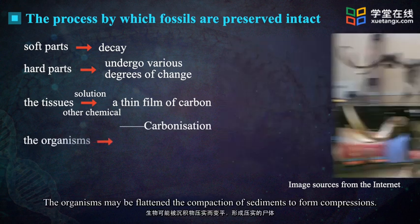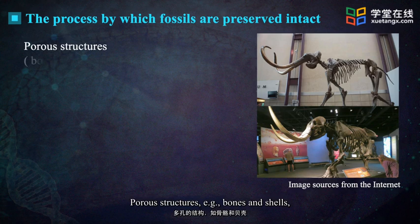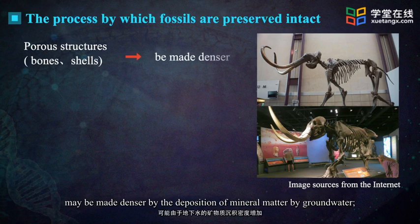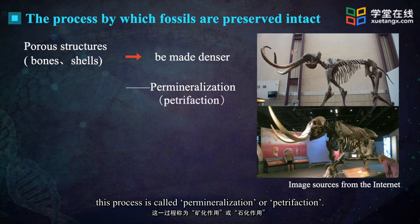Organisms may be flattened by the compaction of sediments to form compressions. Porous structures, such as bones and shells, may be made denser by the deposition of mineral matter by groundwater. This process is called permineralization or petrifaction.